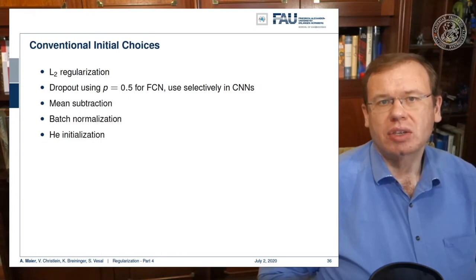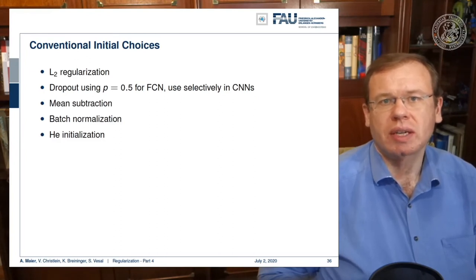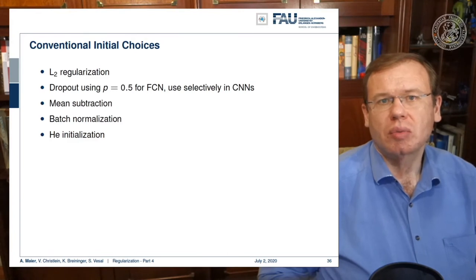Then there are other initial choices that you typically do. L2 regularization, you use dropout with a probability of 0.5 for fully connected layers, and you use them selectively in convolutional neural networks. So you do mean subtraction, batch normalization, and He initialization. So this is the very typical setup.